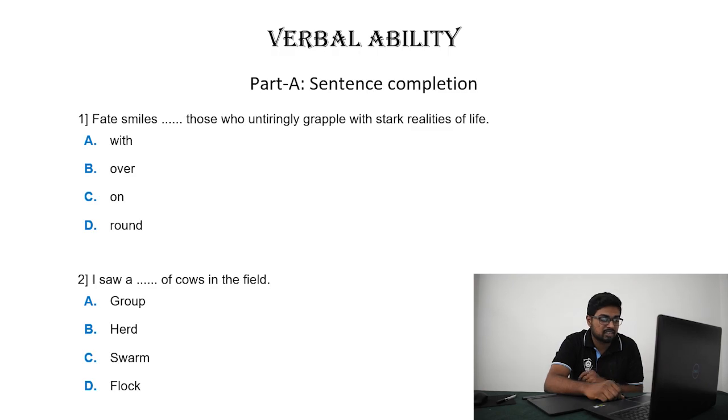For this sentence, the options are with, over, on, and round. The best choice for this is on, because fate cannot smile with you or over you. It's like a way of actually achieving your goal. So fate smiles on those who untiringly grapple with stark realities of life. That makes perfect sense.